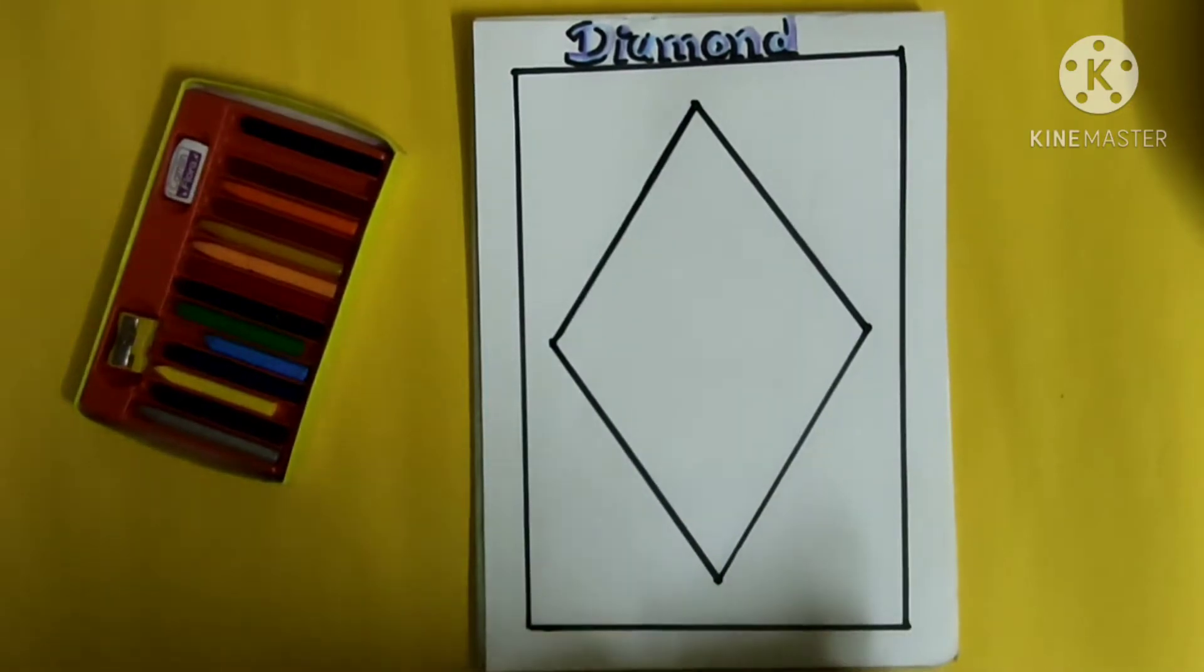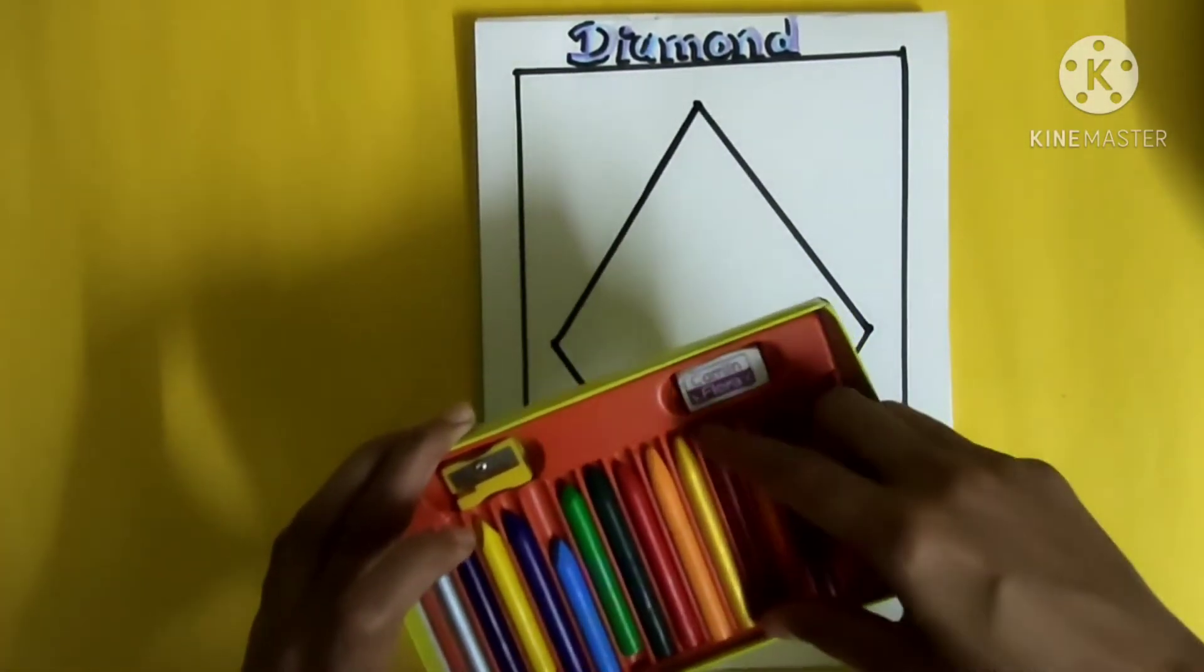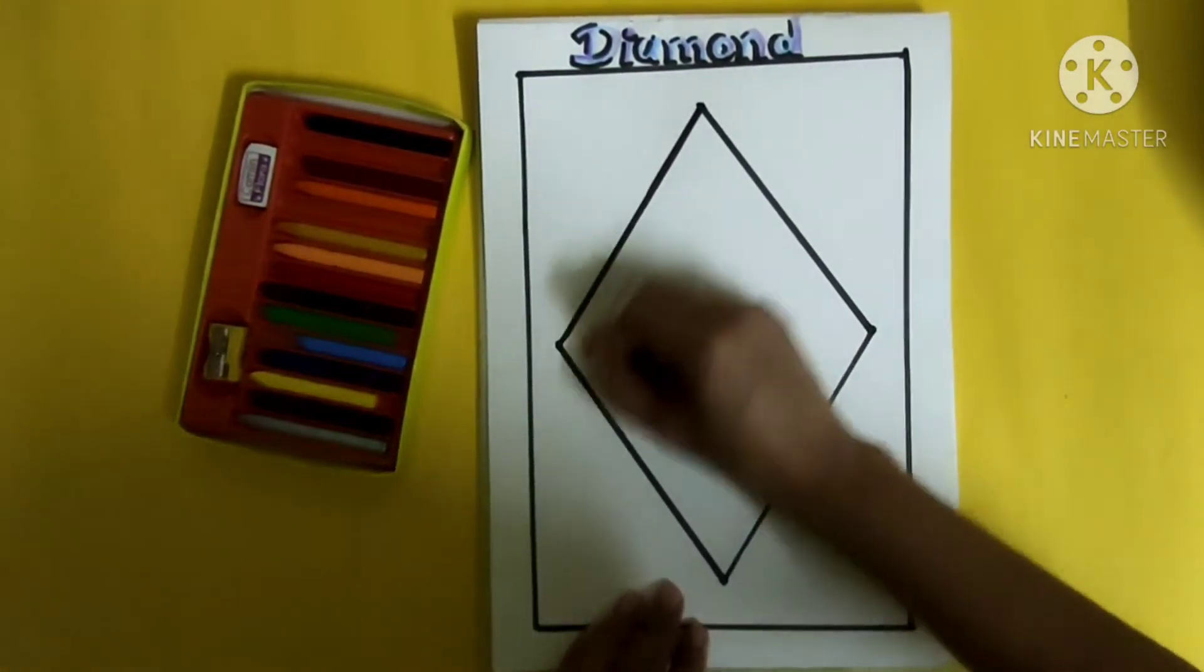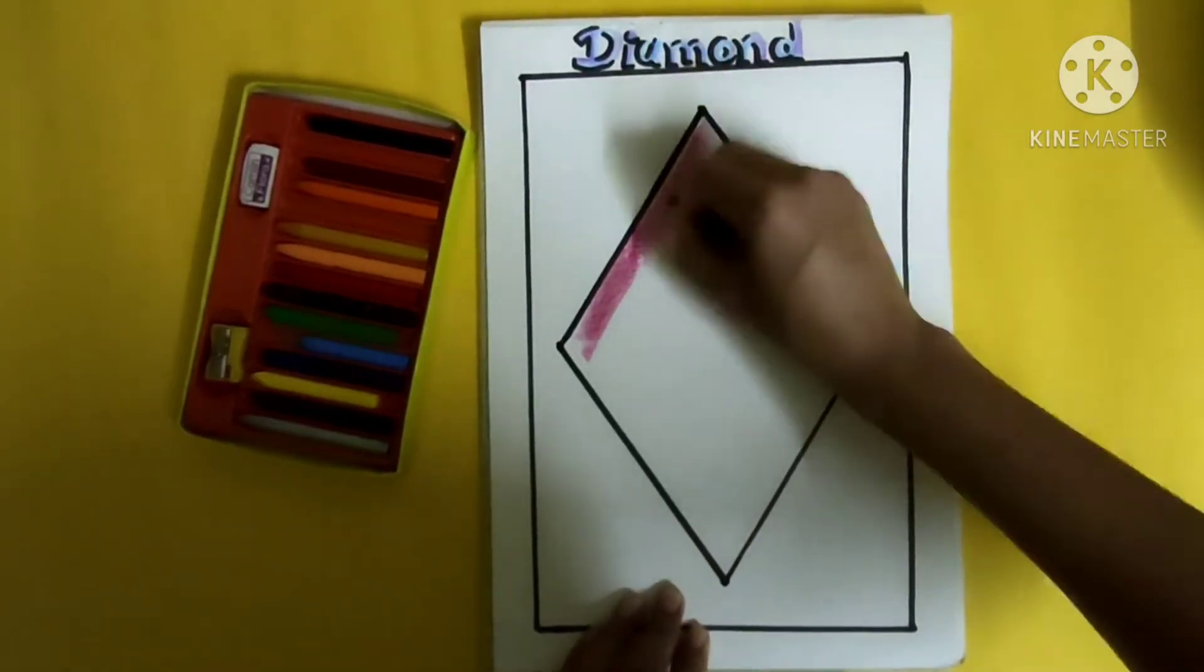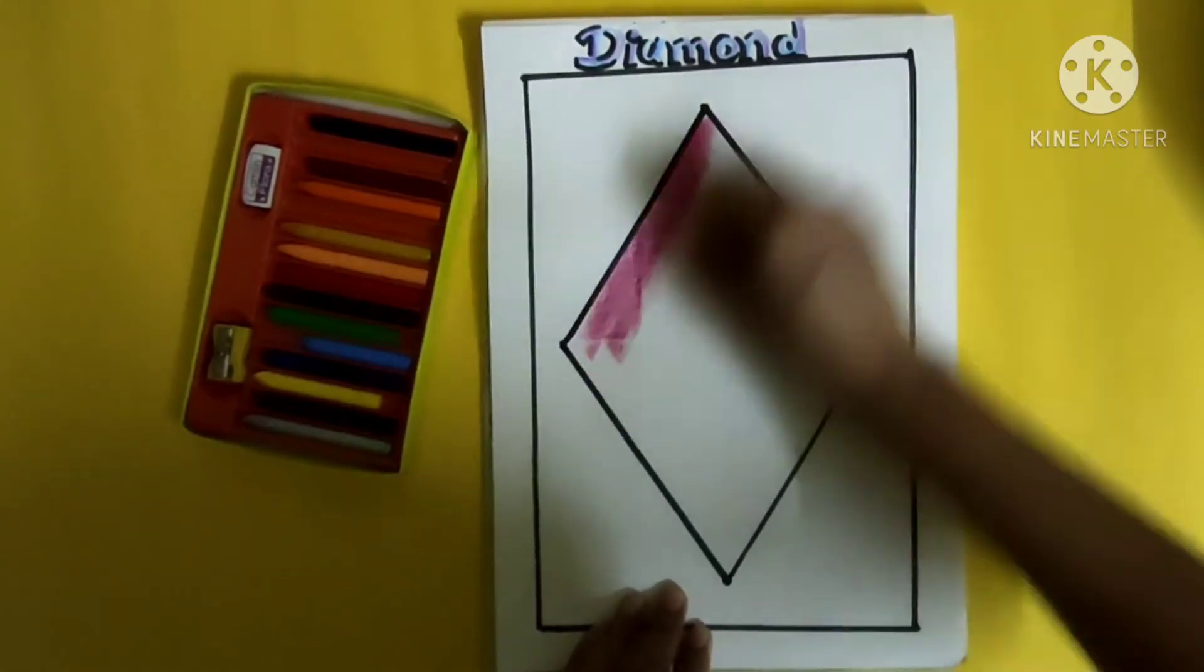So now we will color it. For coloring we will use here dark red color, or it's called crimson red also. So color it properly inside the shape.